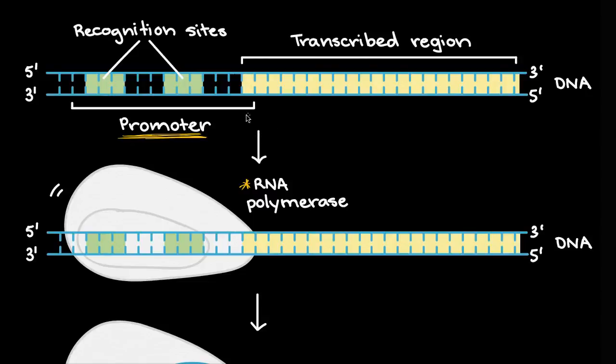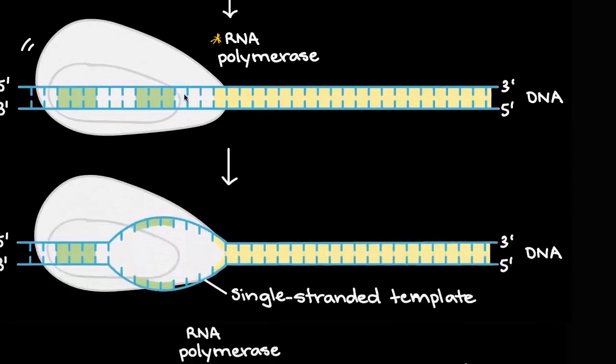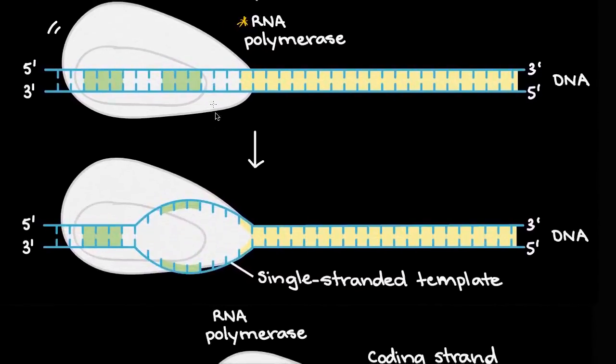Sometimes you might have a promoter associated with a collection of genes as well. But in general, if you've got a gene, you're going to have a promoter. And so that's how the RNA polymerase knows to attach right over there. And so once it attaches, well then it is able to separate the strands.